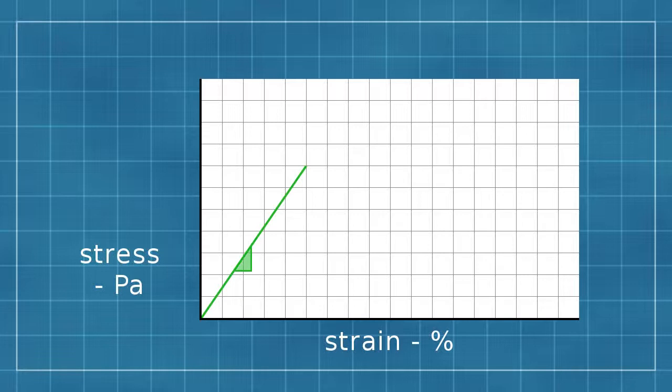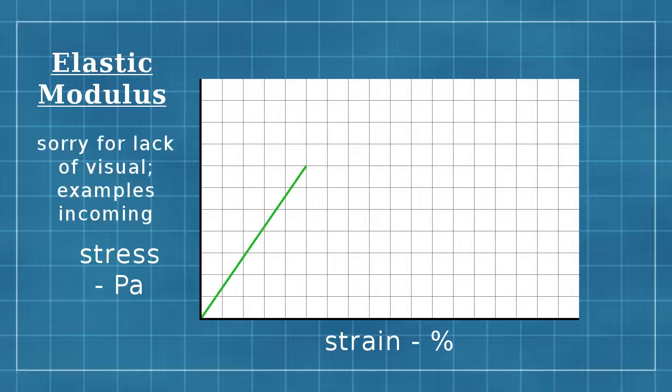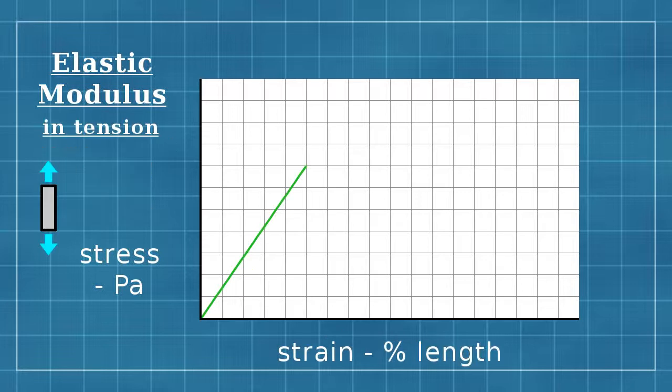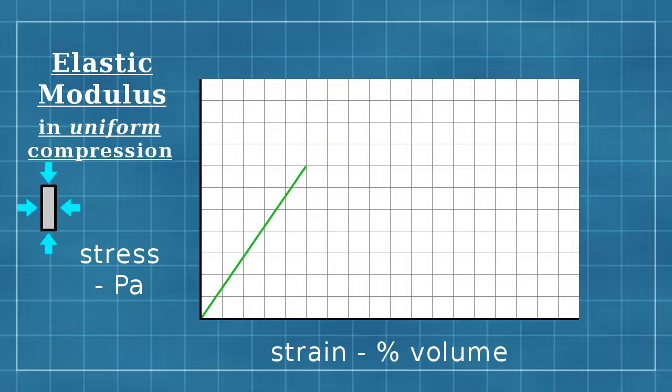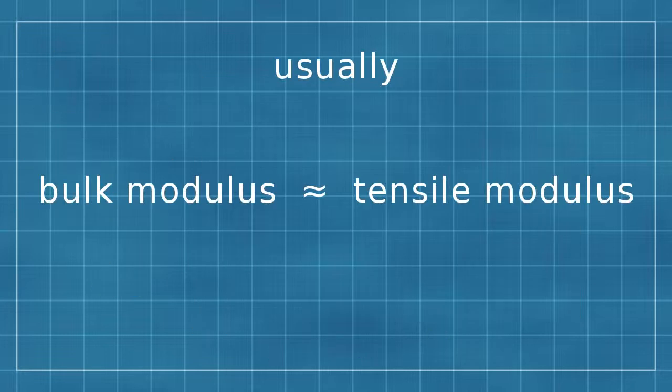The proportion of stress to strain in the elastic zone is given as the elastic modulus, the amount of stress that would be required to cause a hypothetical amount of strain. The elastic modulus in tension, often called Young's modulus, is defined as the stress required to reach twice the original length. This is usually calculated because most materials don't elastically stretch that far. The elastic modulus in uniform compression is called the bulk modulus, and it's the amount of stress required to compress the material to half of its original volume. It is roughly equal to the tensile modulus in most cases.